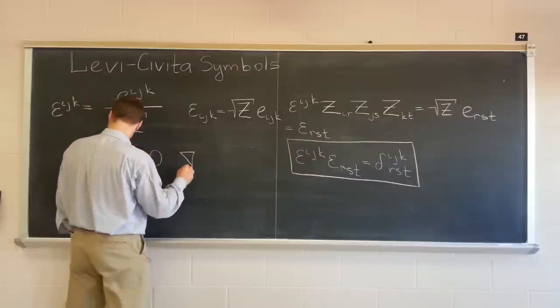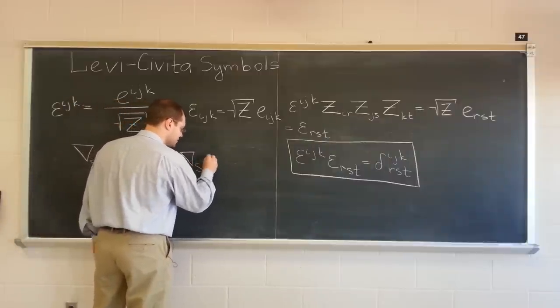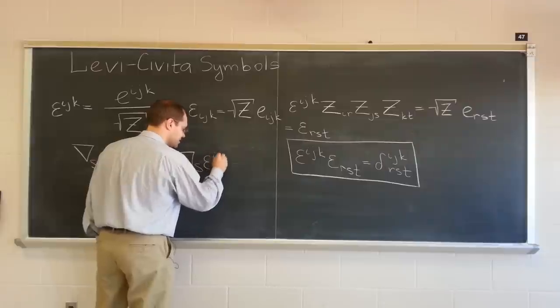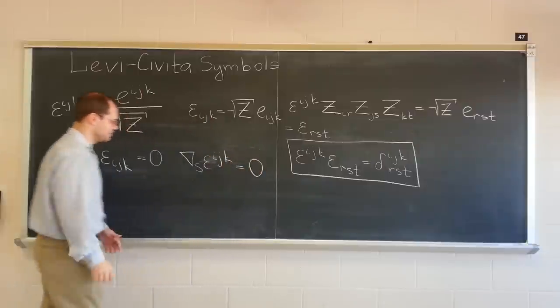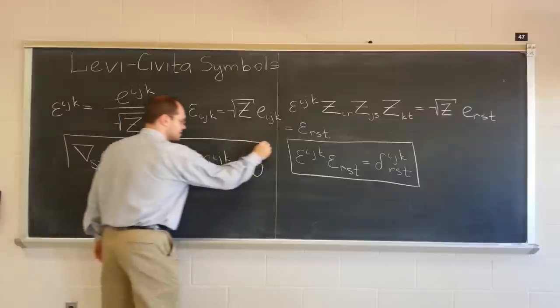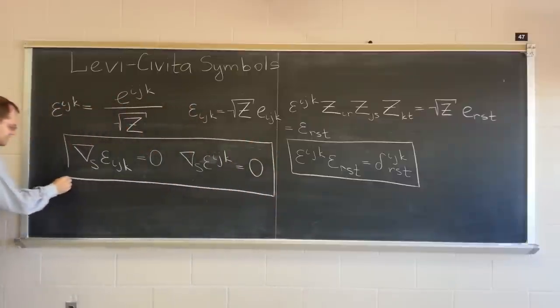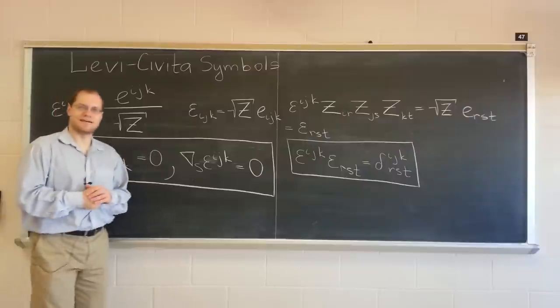And of course, the same is true, easy to show from this, for the Levi-Civita symbol with upper indices. Also subject to the metronilic property. So perhaps this should be boxed as well, because that's part of our tensor calculus differentiation table. So that's important. Alright.